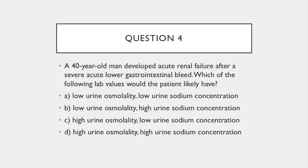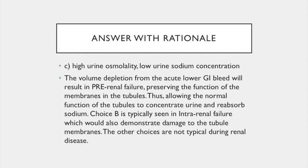Question 4. A 40-year-old man developed acute renal failure after a severe acute lower gastrointestinal bleed. Which of the following lab values would the patient most likely have? The answer is C. The volume depletion from the acute lower GI bleed will result in pre-renal failure, thus preserving the function of the membranes in the tubules. This allows the normal function of the tubules to concentrate urine and reabsorb sodium. Choice B is typically seen in intra-renal failure, which would also demonstrate damage to the tubule membranes. The other choices are not typical during renal disease.